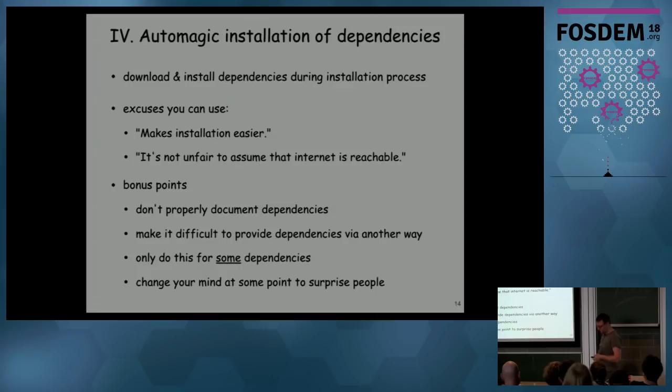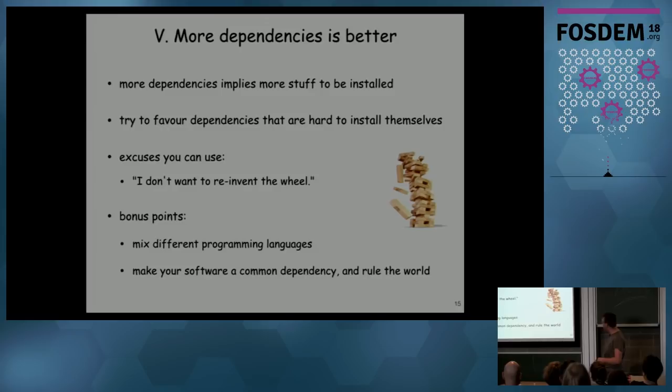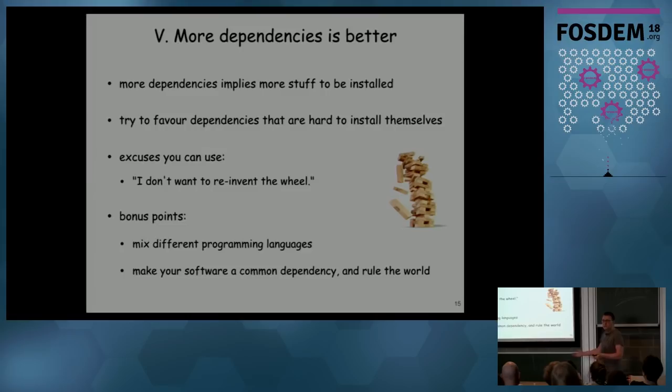More dependencies is better — build the stack as high as you can, so people need to install more stuff before actually getting to your software. Try to pick dependencies that are hard to install themselves to make them lose time. You don't want to reinvent the wheel, so you use dependencies rather than doing stuff yourself — that makes sense, so you get a Jenga tower. Use dependencies with different programming languages as another factor of difficulty — people hopefully don't know about OCaml, so try to use OCaml.